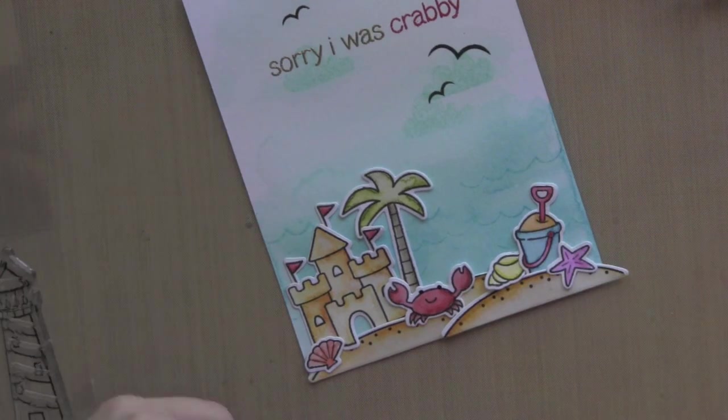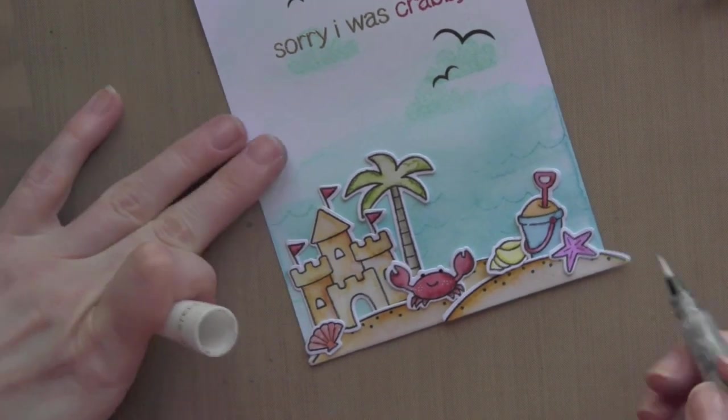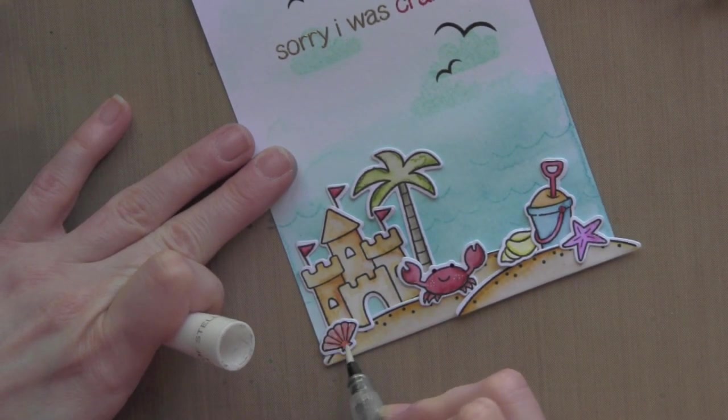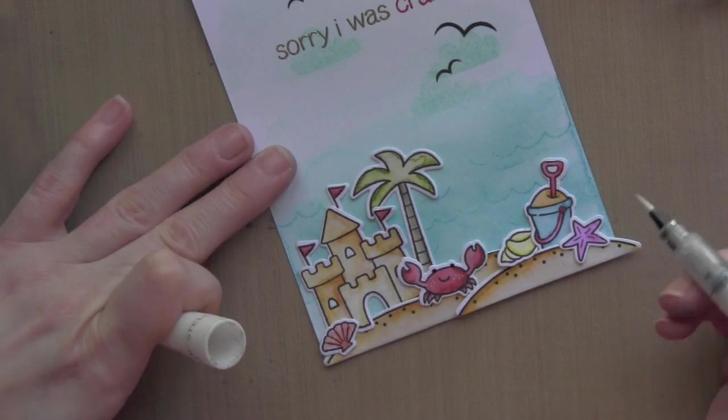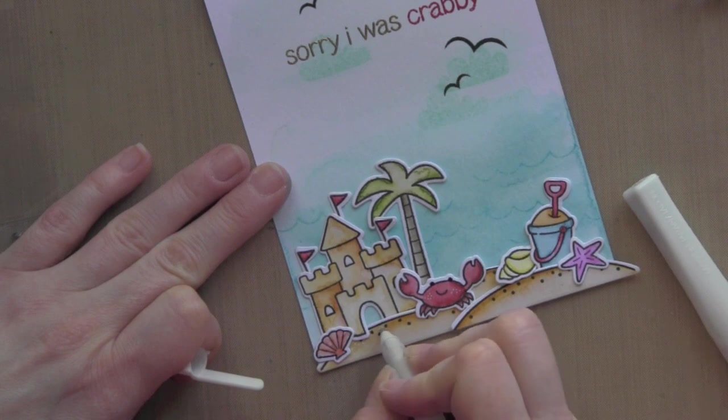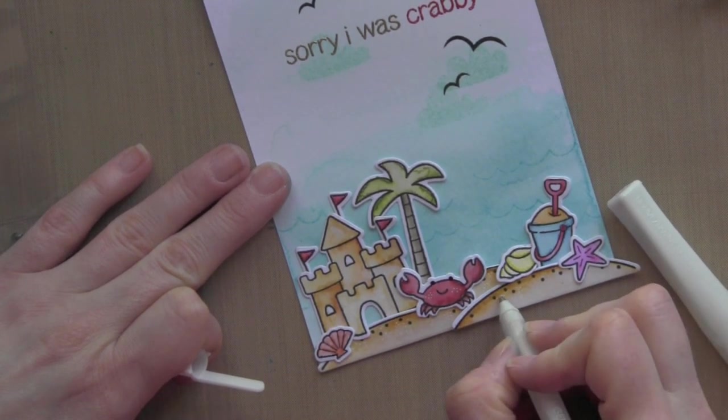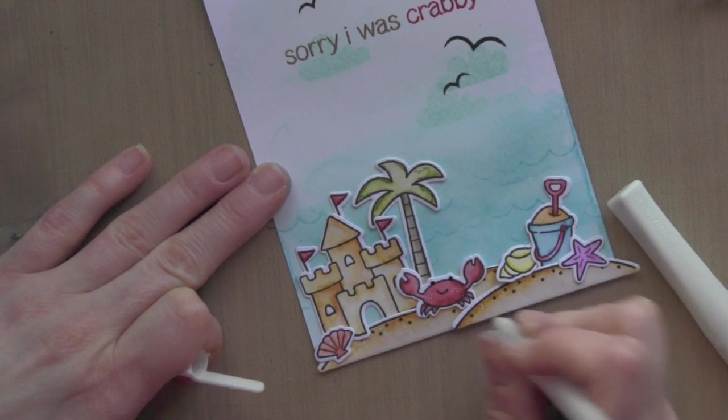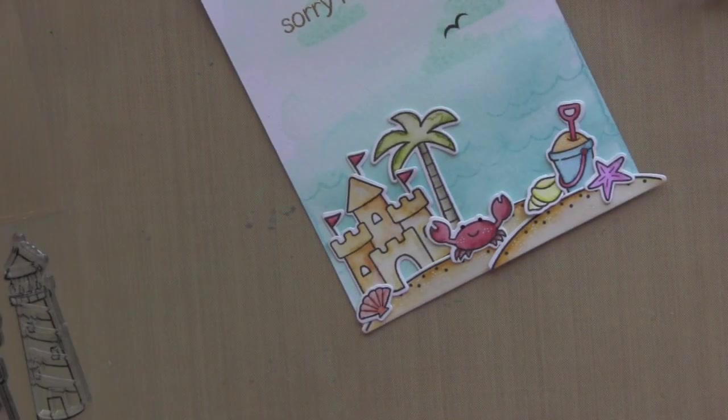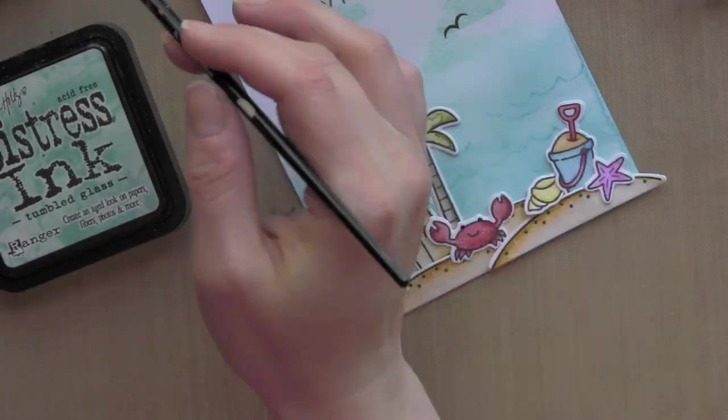I am going to take the Sakura black gel pen and just add some detail for the crab's eyes, and the white opaque pen to add some little dots to his cheeks. The Wink of Stella glitter pen to add some glitter detail here and there. And then I will go along the sand with the white opaque pen and just add some little dots as well to give the sand a little additional depth and dimension. This is a really flat card for as much as is going on. I love that because it is very easy to mail.